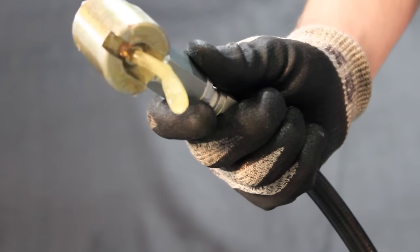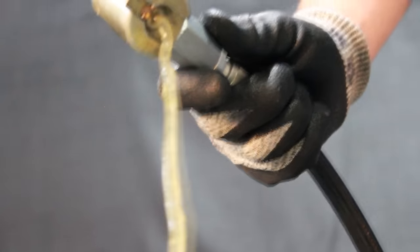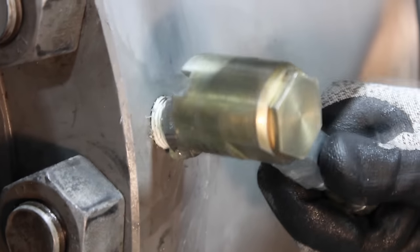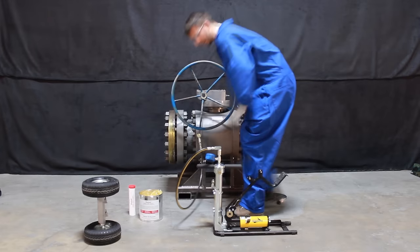Every 11 strokes of the pump generates an ounce of product through the hose assembly. Once product begins flowing, attach the coupler to the desired fitting.